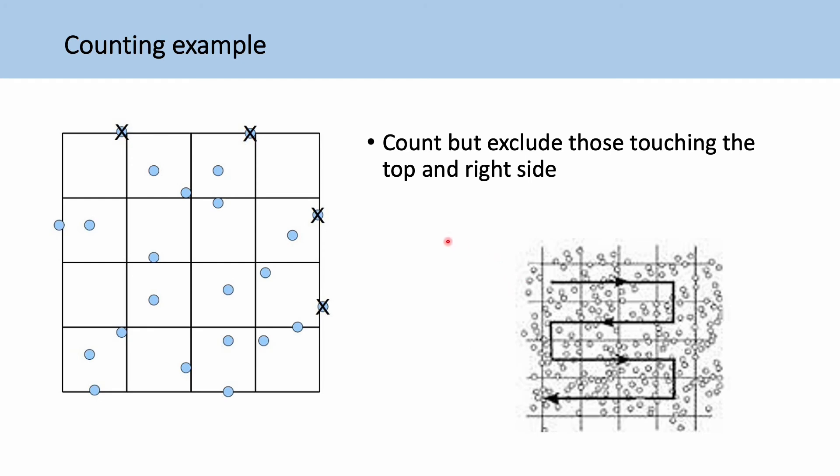So when you're counting, you just want your process to be very consistent. So what a lot of people do is they count, but they exclude the cells that are touching the top and the right side. But then again, some people use the other sides. So in this example, we'll just exclude the top and the right side. And then you also want to do a kind of consistent route for counting. So this kind of zigzag route and do that every time is an example of one way to do that.